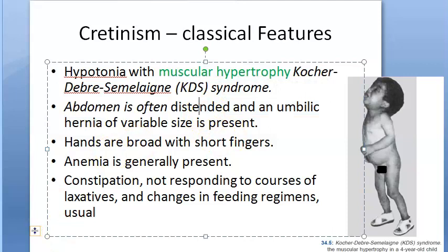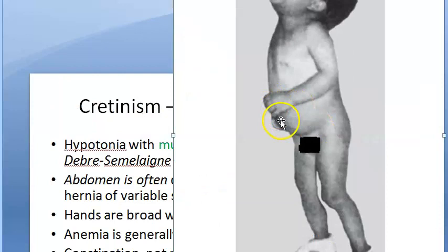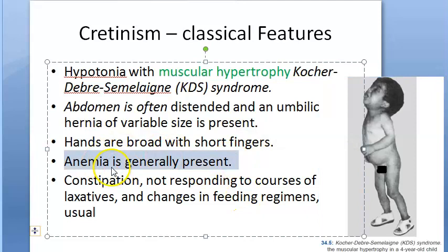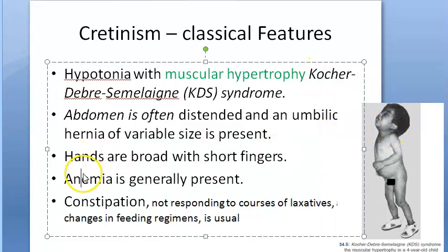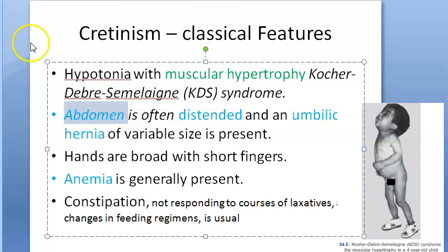Continuing the classical features: the abdomen is often distended and umbilical hernia can be present. Hands are broad with short fingers. Anemia is generally present, and constipation does not reduce with laxatives or changes in feeding regimen. Many of these findings — anemia, umbilical hernia, abdominal distension, skin changes — overlap with the earliest manifestations.